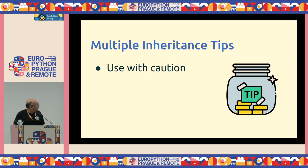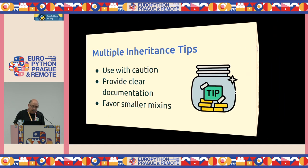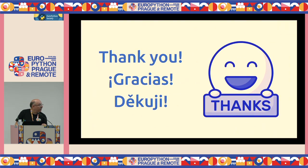To conclude: use multiple inheritance with caution. Prefer single inheritance or no inheritance, and favor composition instead. If you do use multiple inheritance, provide clear documentation and favor smaller mixins. We covered multiple inheritance, the diamond problem, the method resolution order, super(), mixins, its drawbacks, and alternatives using composition and the Interface Segregation Principle. I hope this was interesting — thank you very much.